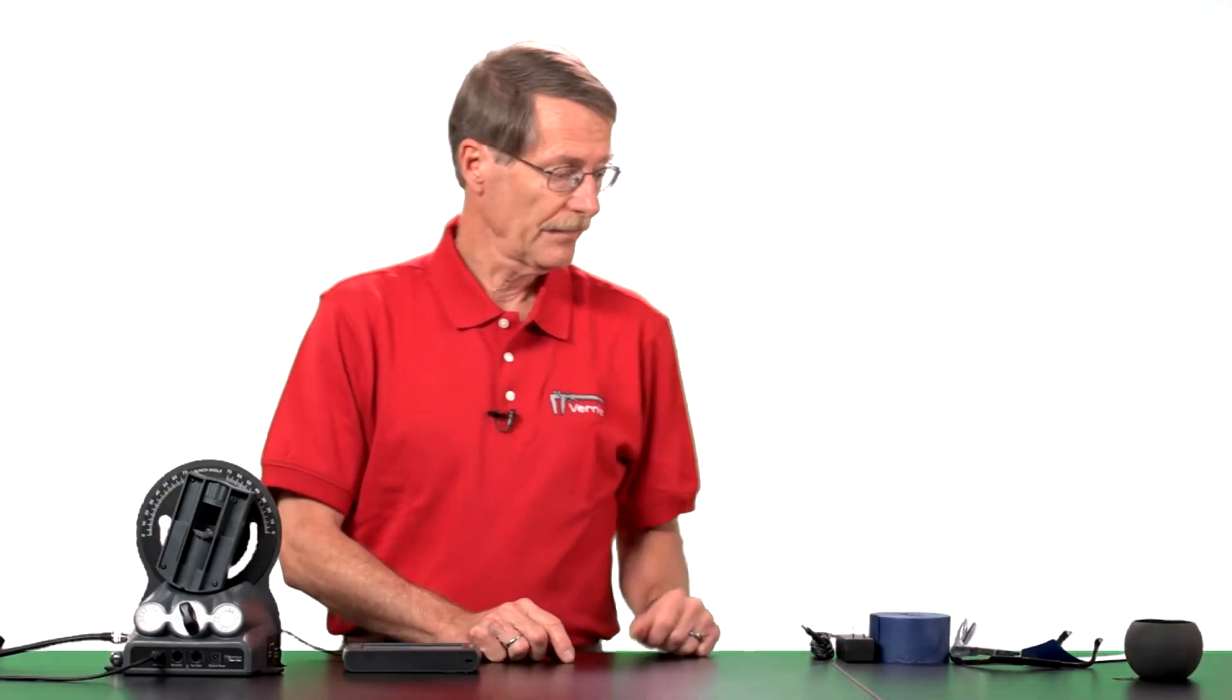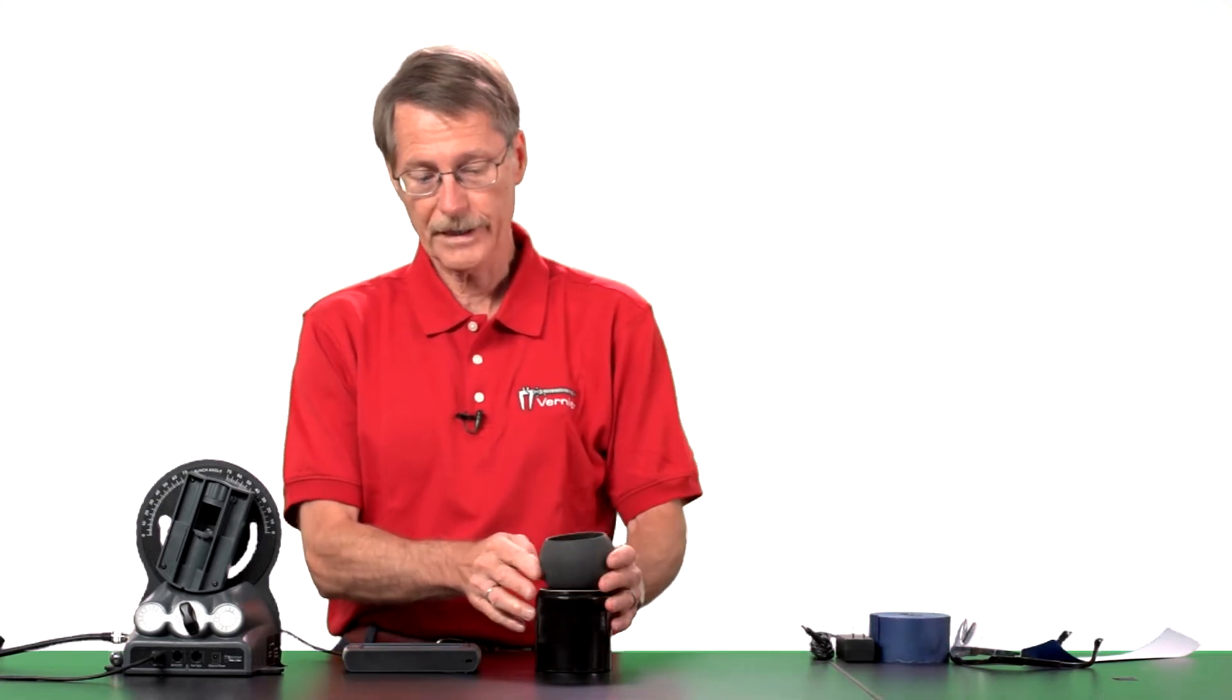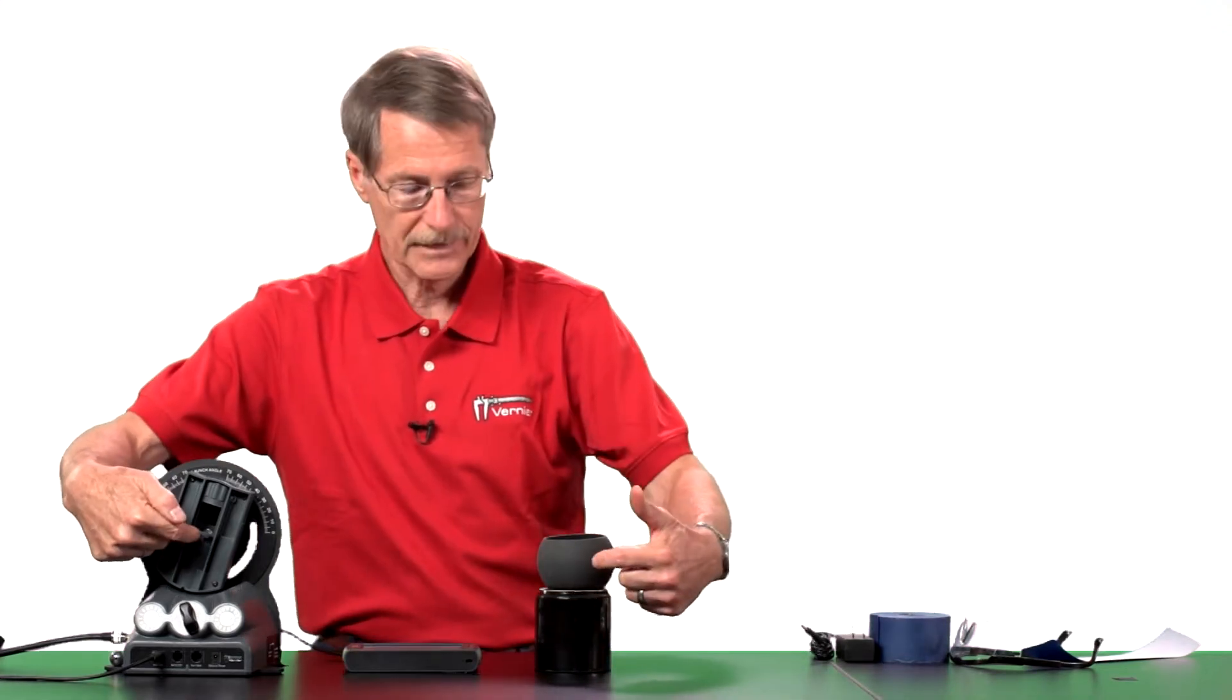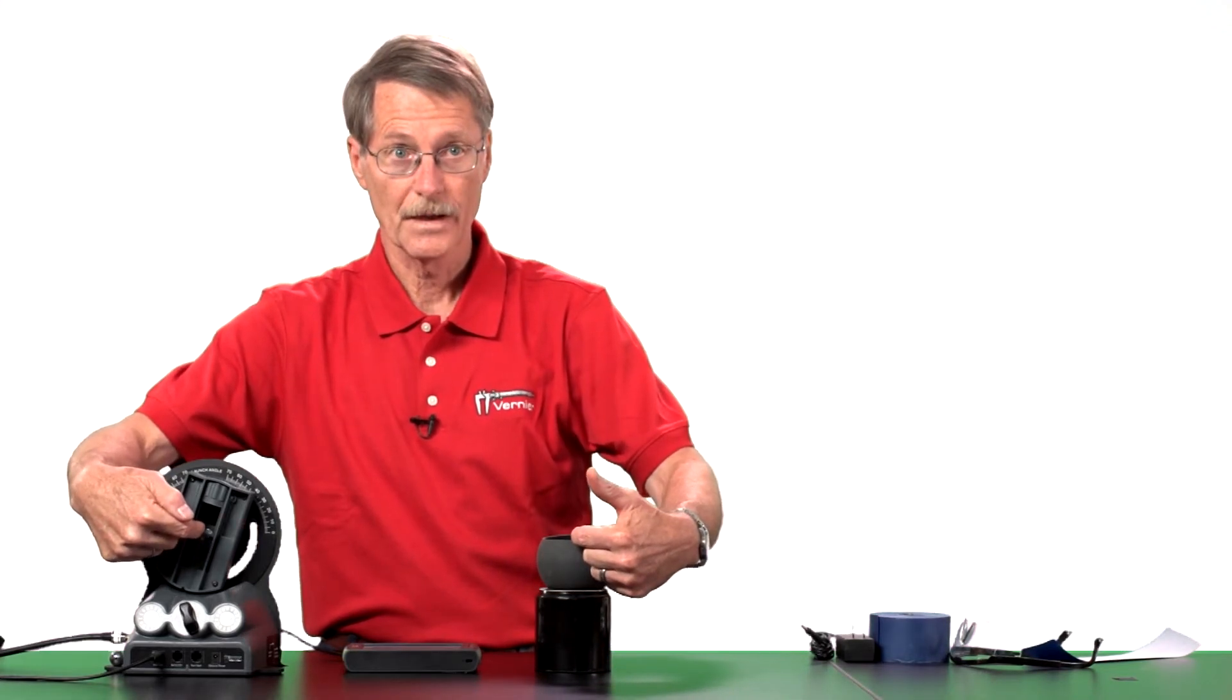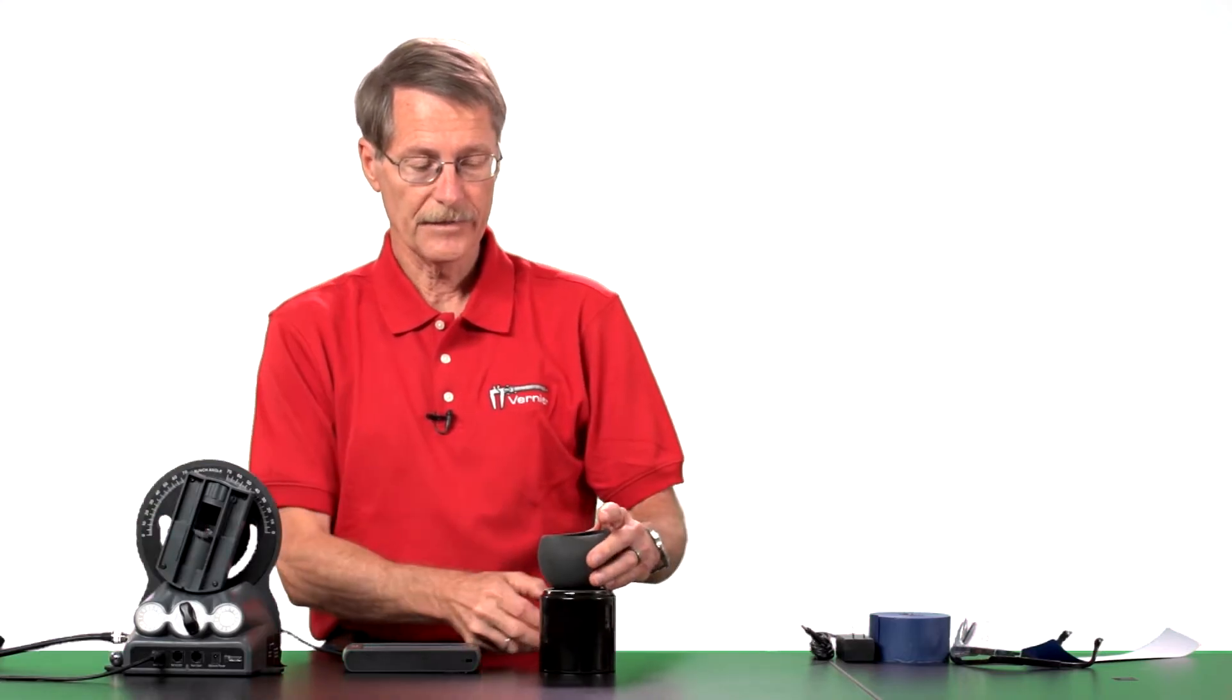Here we have a little cup that we're going to try to hit later. If you want to make that math easier, you can raise the cup up, the target up, so that it's the same height as our launcher. And then that makes that calculation very simple. If you want to make it tougher, you don't do that, and then the students have to allow for the height change. That's a better calculation for advanced students.